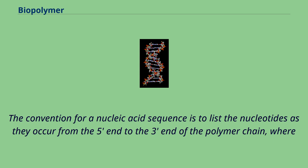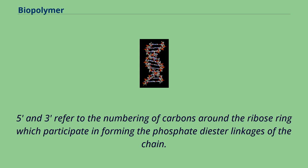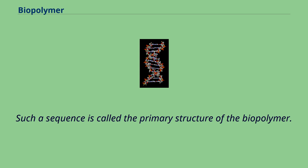The convention for a nucleic acid sequence is to list the nucleotides as they occur from the 5' to the 3' end of the polymer chain, where 5 and 3 refer to the numbering of carbons around the ribose ring which participate in forming the phosphodiester linkages of the chain. Such a sequence is called the primary structure of the biopolymer.